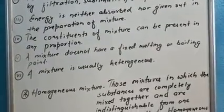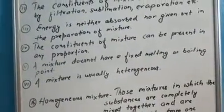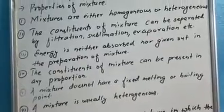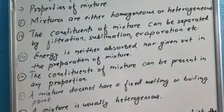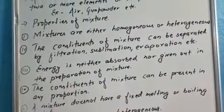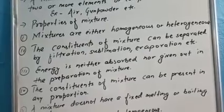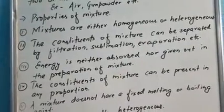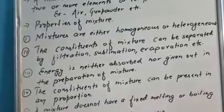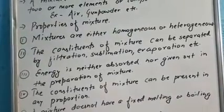Homogeneous mixtures mein substances ek-dusre ke saath completely mixed hote hain aur unhein ek-dusre se alag nahin kiya ja sakta — woh indistinguishable hain. Unhein alag karne ke liye kisi method ka use karna padta hai. Homogeneous and heterogeneous ko hum aage discuss karenge, filhaal properties ki baat karte hain.